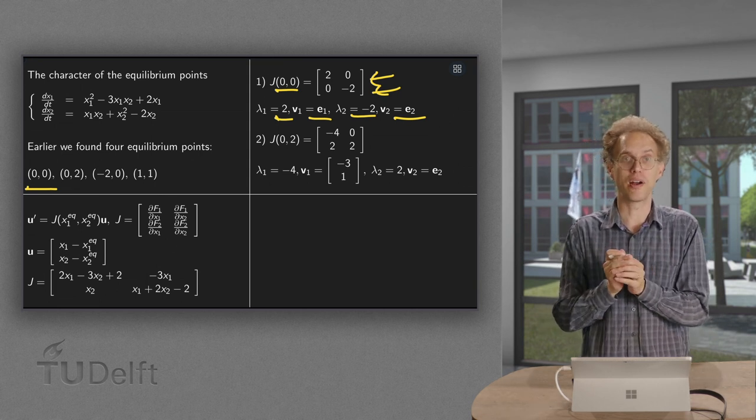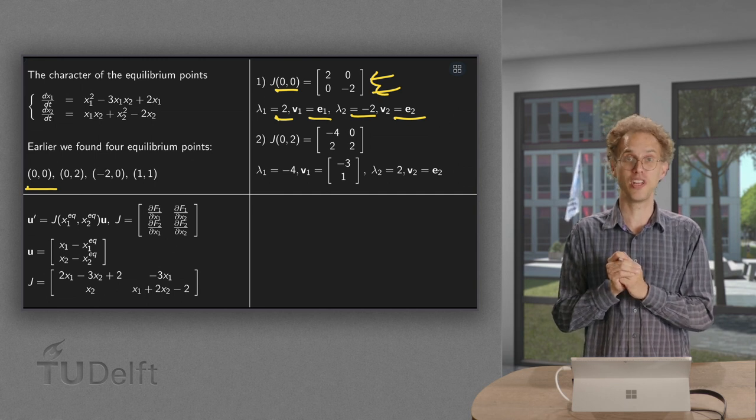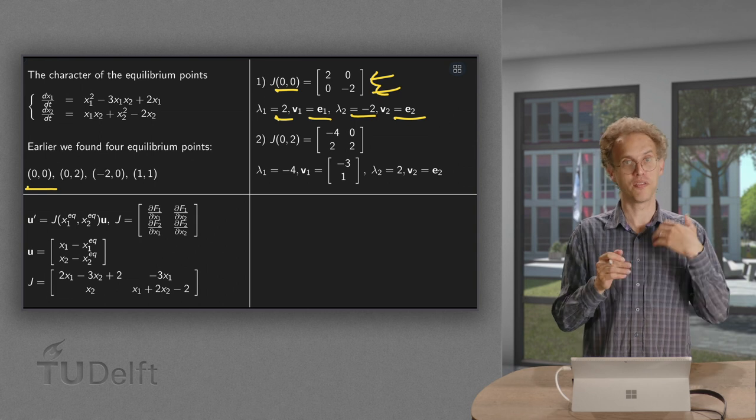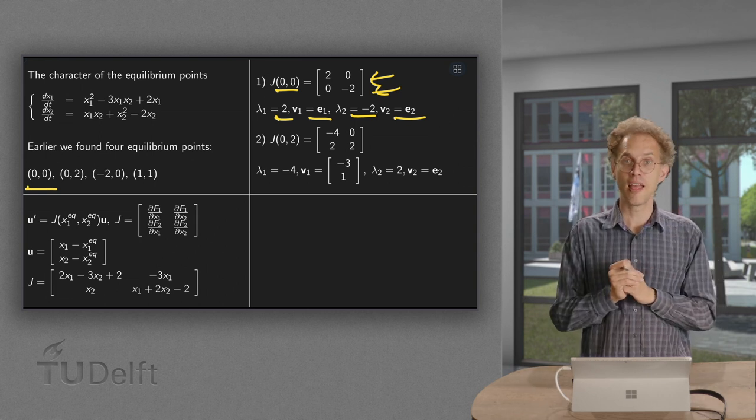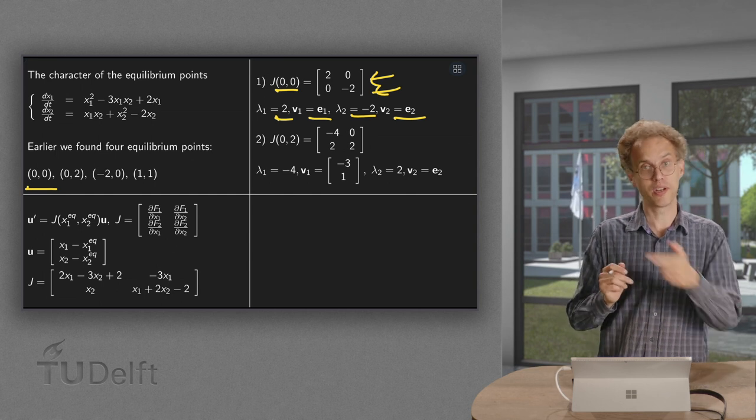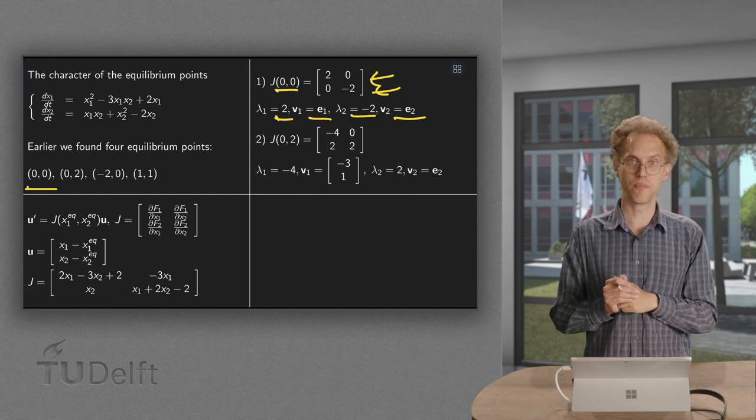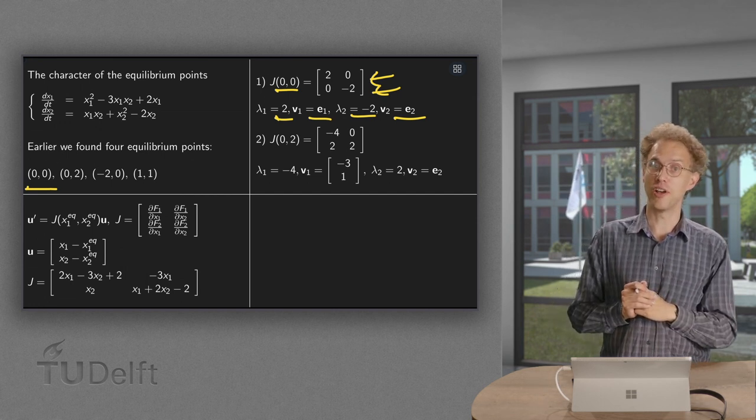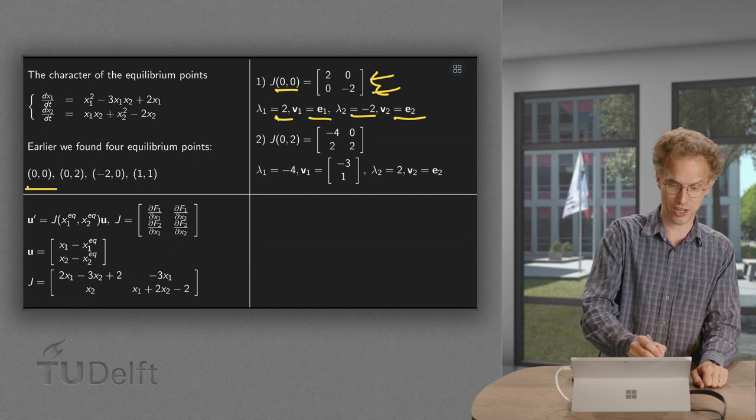So we now know how our non-linear system behaves in the vicinity of the origin. It will be a saddle point because we have eigenvalues 2 and -2 with e1 as outgoing direction and e2 as an incoming direction. First equilibrium point done, onto the second one (0,2).